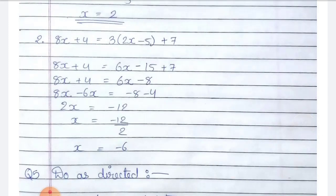Number 2: 8x plus 4 is equal to 3 into bracket 2x minus 5 plus 7. Expanding: 8x plus 4 is equal to 6x minus 15 plus 7.